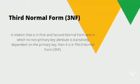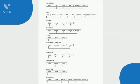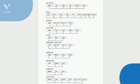Third Normal Form says that the relation should be in First and Second Normal Form, and there should not be any transitive dependency on the primary key. As we have seen, there is no transitive dependency, so our relation schema is also in Third Normal Form.